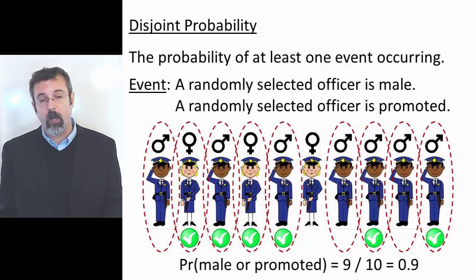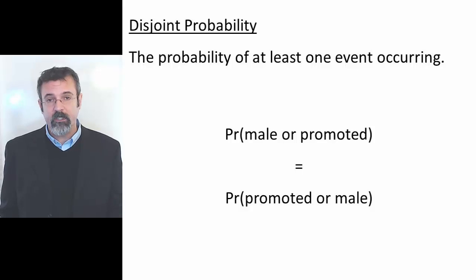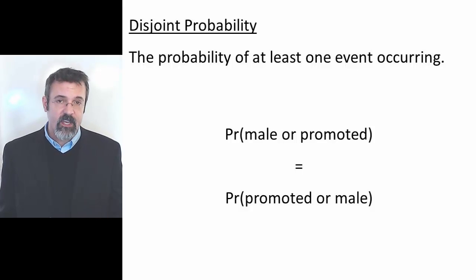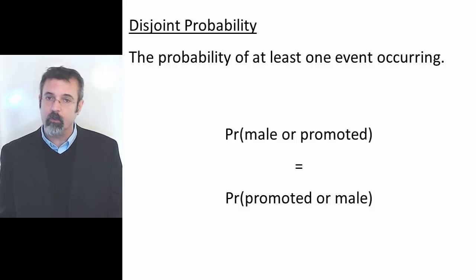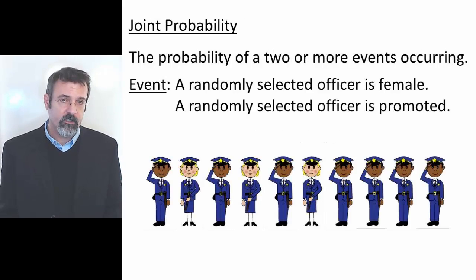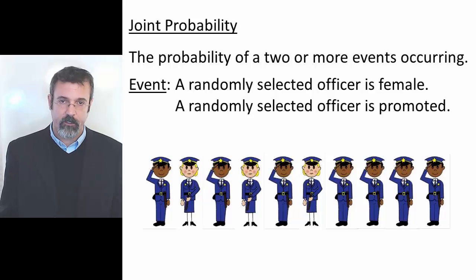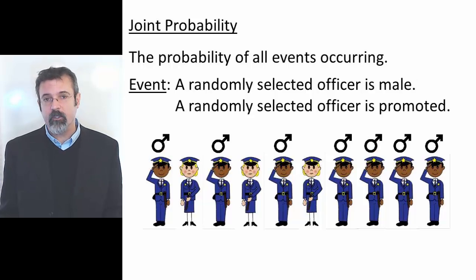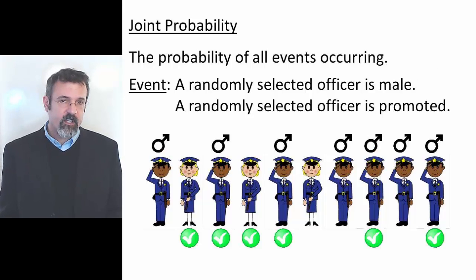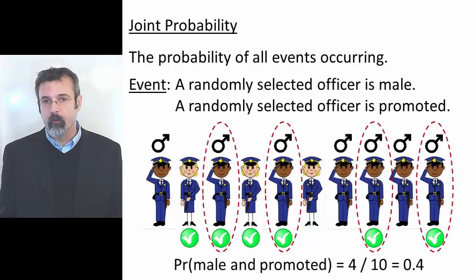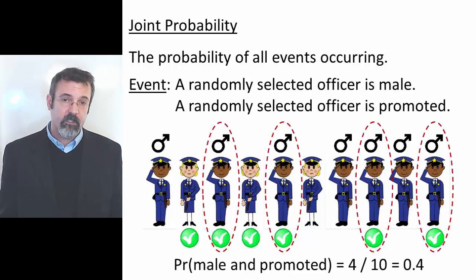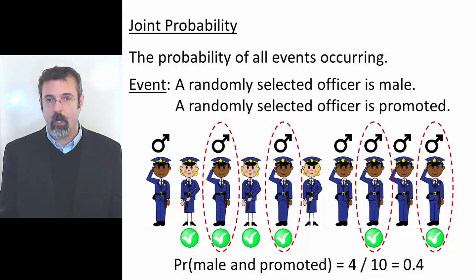Notice that disjoint probabilities are reflexive — the probability of being male or promoted is the same thing as the probability of being promoted or male. A joint probability is the probability of all the events occurring. Out of our 10 officers, 7 are male, 6 have been promoted, but only 4 of the officers are both male and promoted.